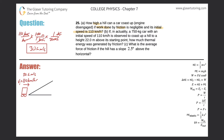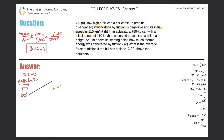We want to find the final height the car reaches as it coasts up the hill. Since work done by friction is negligible, we assume no friction, which means all of the initial kinetic energy will be converted to potential energy at the top. At the top the car isn't moving, so there's no kinetic energy — it's all potential. And at the start there's no height, so it's all kinetic.